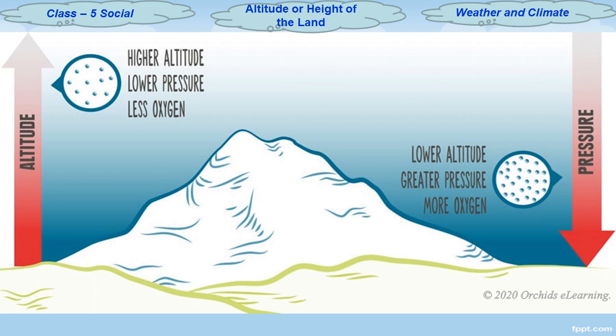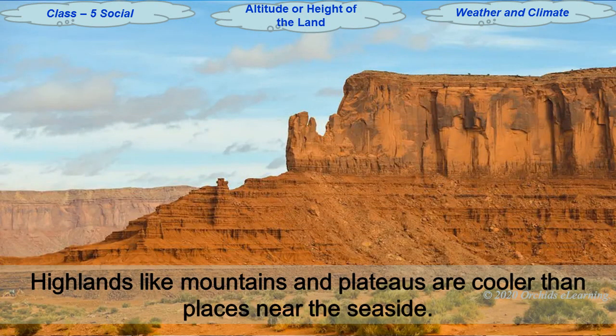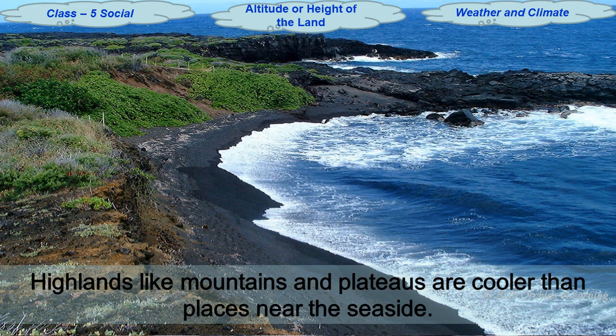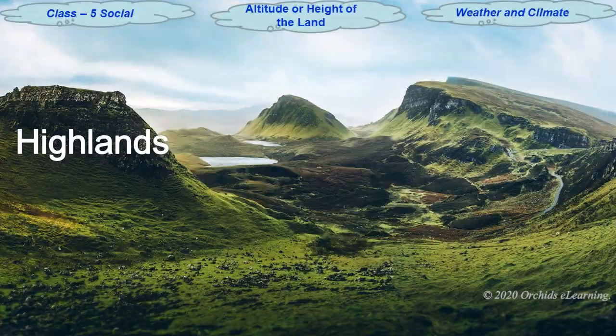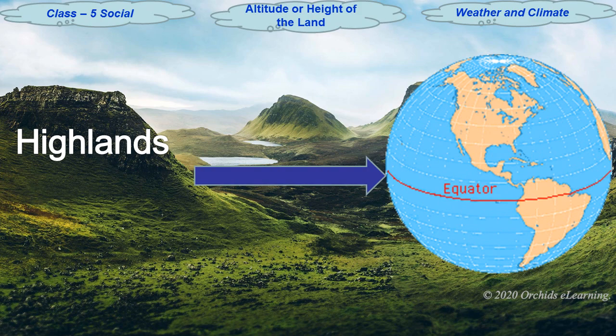Another factor that affects climate is altitude, or height of land. The altitude of a place also affects its climate. Highlands like mountains and plateaus are much cooler than places where the land is at sea level. This is so even if these highlands are close to the equator, and such places, if they are very high, will also get snow.